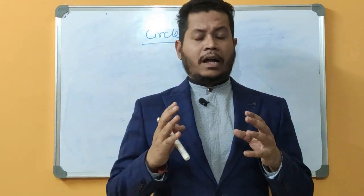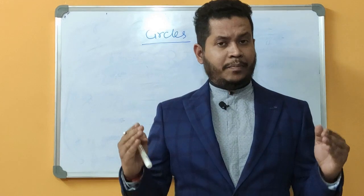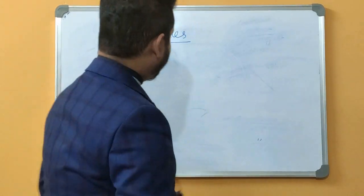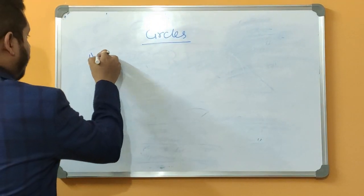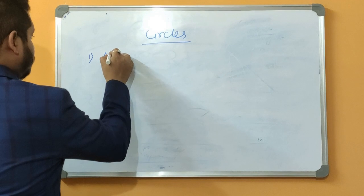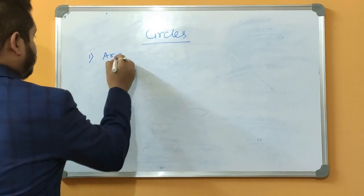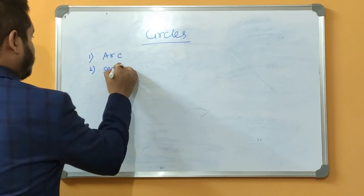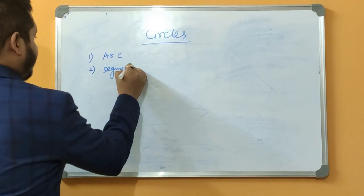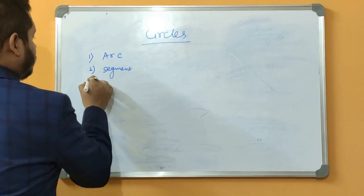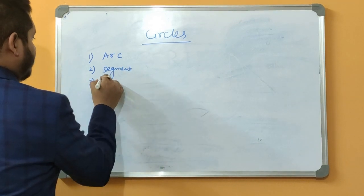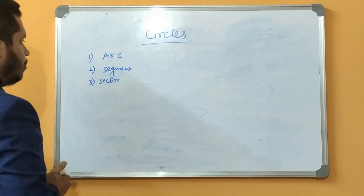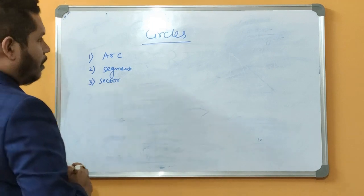Now we will understand three basic terms: the first one is called the arc, the second one is called the segment, and the third one is called the sector. We are going to understand them one by one.